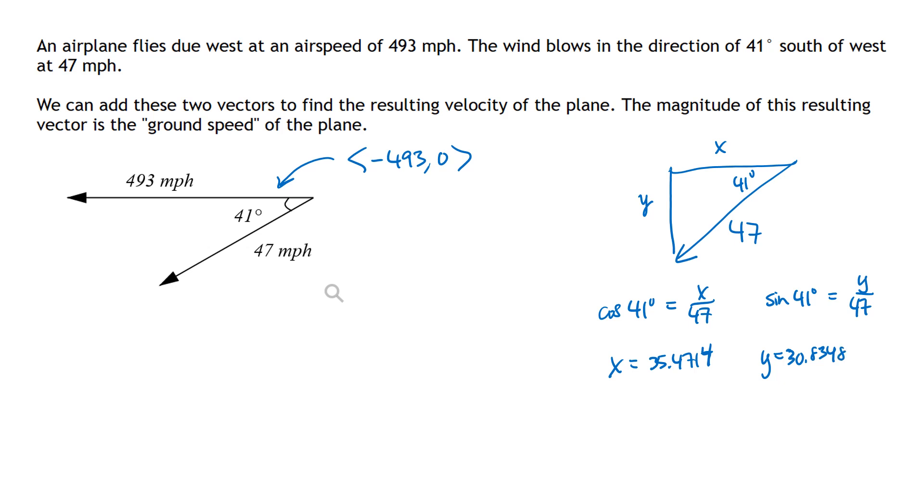So that means that this vector is going to be negative 35.4714, negative because the vector is pointing to the left, so its x component is negative. And then comma negative 30.8348. And again, that's negative because the vector is pointing down, so it has a negative y component.